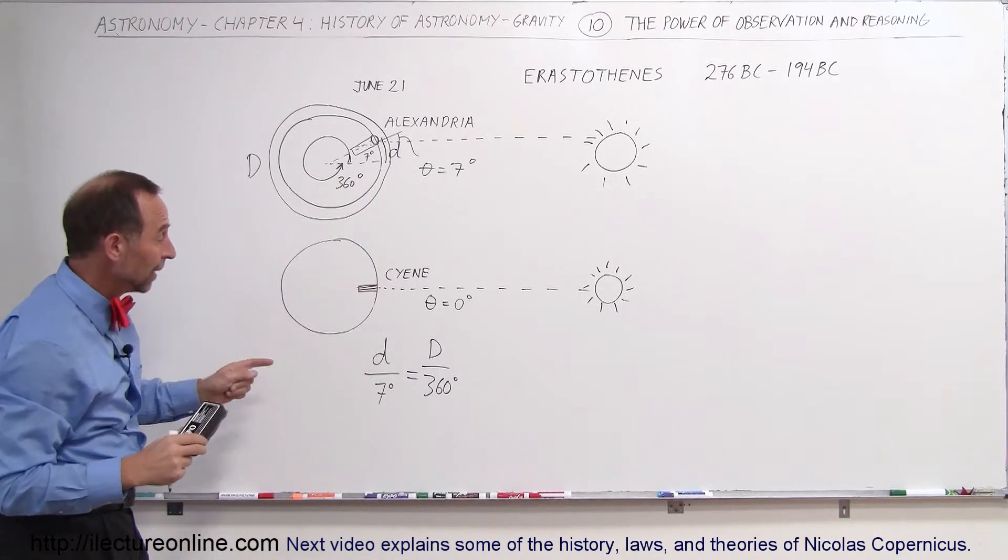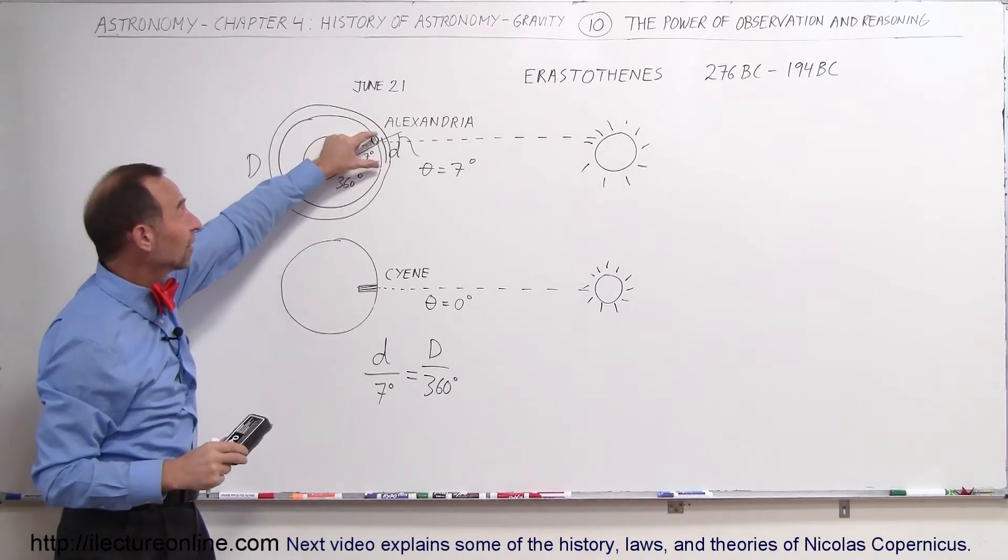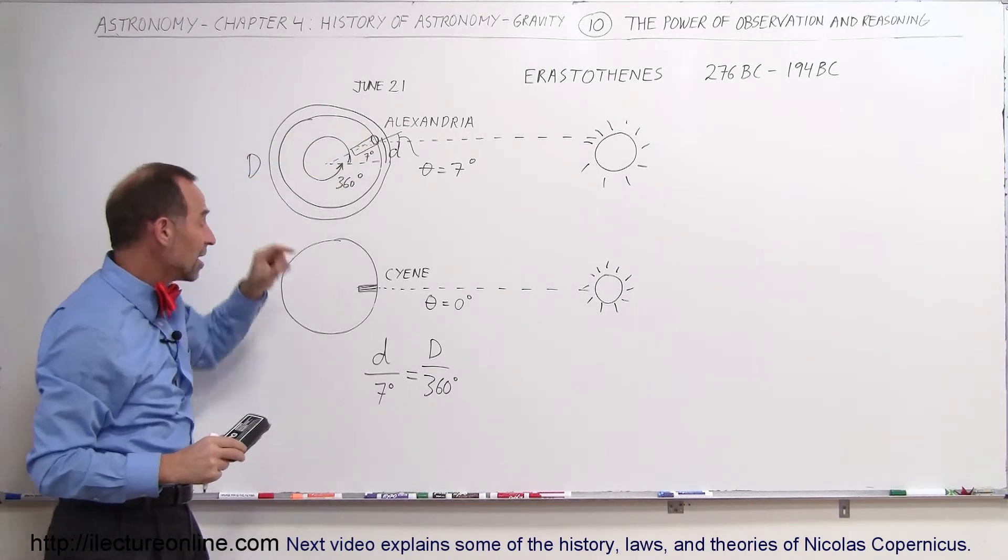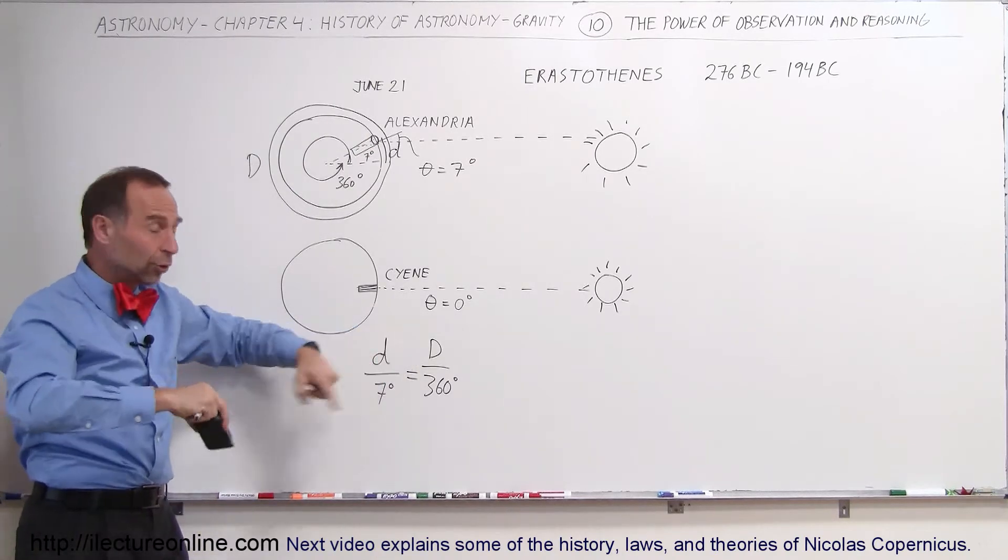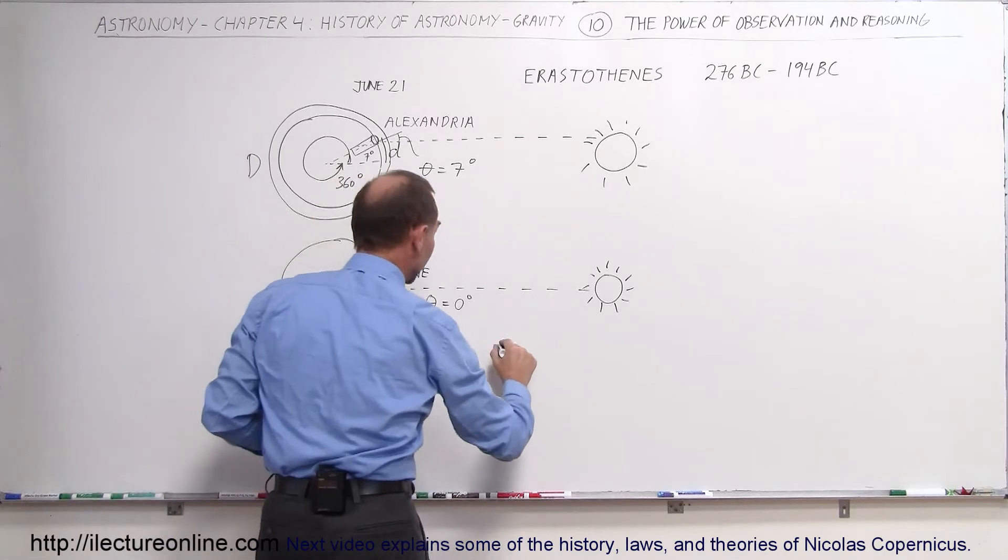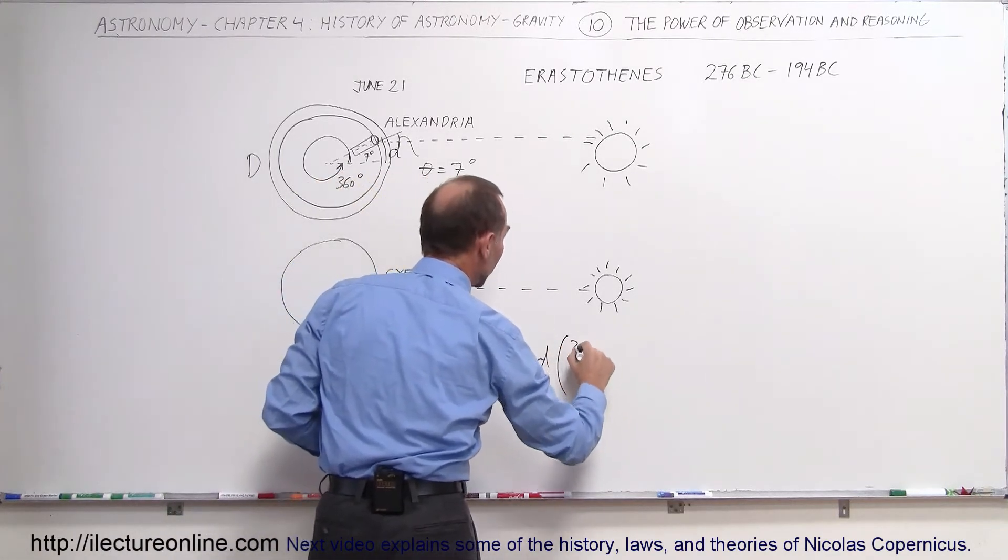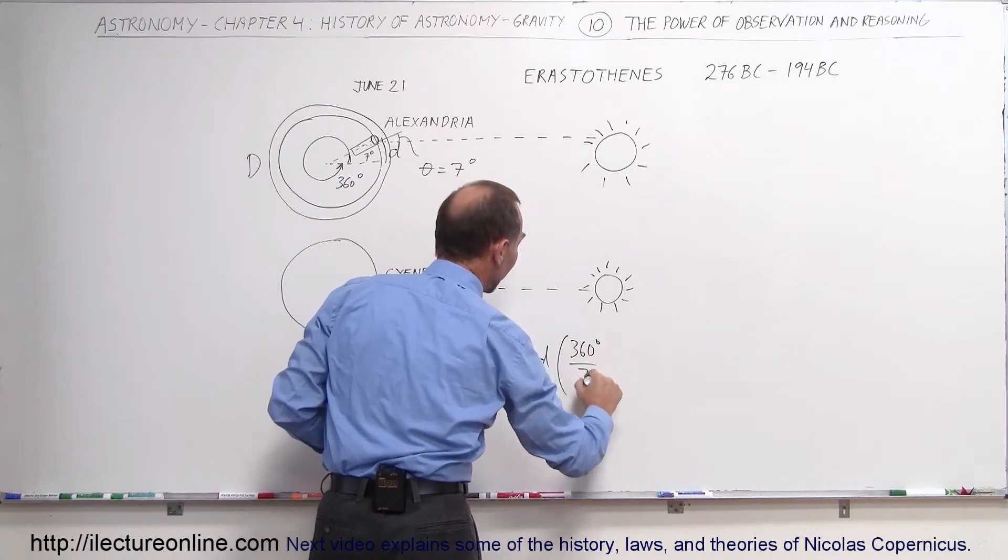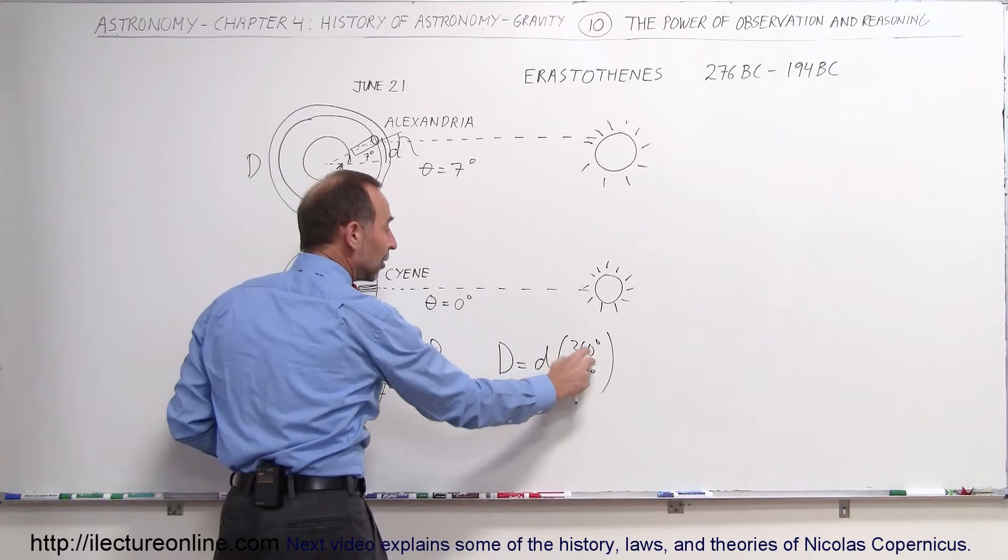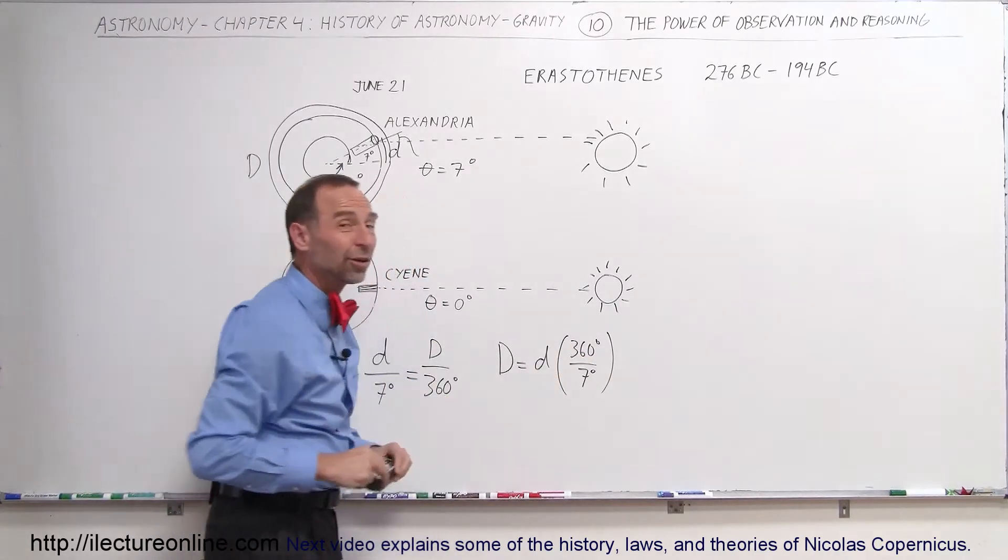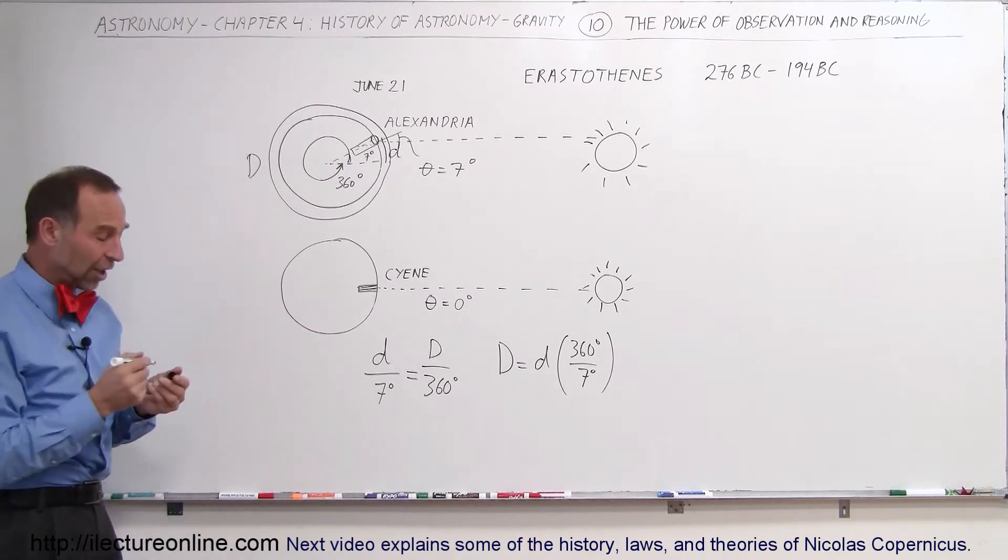So it's simple then. If you then figure out how big small d is, if you can actually figure out the distance between Alexandria and Syene, then you should be able to figure out the distance around the world or the circumference of the world. So we can say then that the distance around the world is equal to the distance between the two cities times the ratio of 360 degrees divided by seven degrees. In other words, you get this number and that number multiplied times d gives you the total circumference of the Earth. Now, all you needed to do was figure out how far it was from Alexandria to Syene.